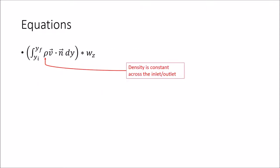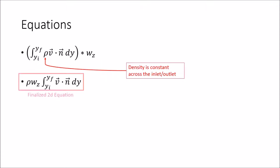We will also assume that the density along the inlet and along the outlet are constant. This is not yet an assumption of incompressibility — we are simply assuming that there are no pockets of different densities along the inlet or outlet. Under this assumption, we can take the density out of the integral to simplify it, which leads us to our finalized 2D equation.